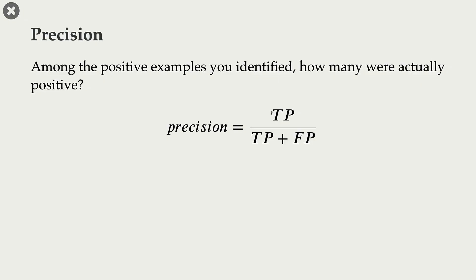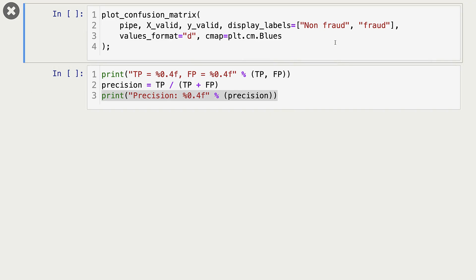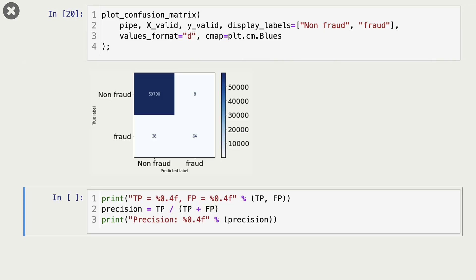So the formula for precision is true positives over true positives plus false positives. And here is our confusion matrix. How many true positives do we have? We have 64 true positives. So the numerator is the same for recall and precision, but the denominator is different. We have 64 true positives and 8 false positives.